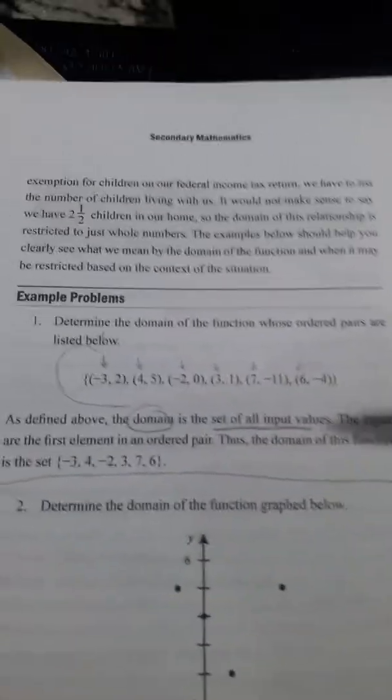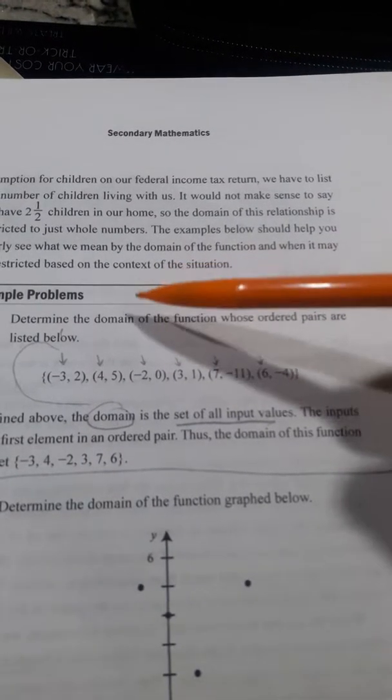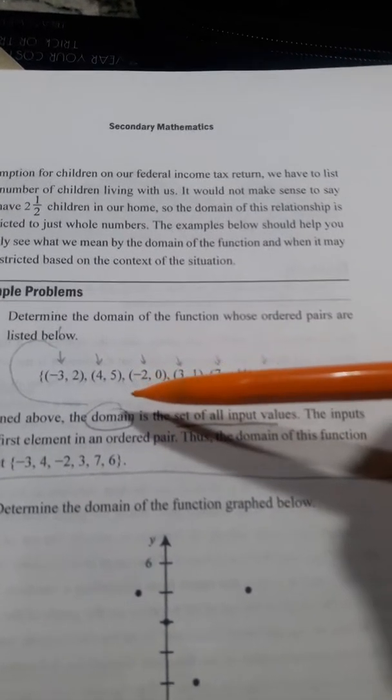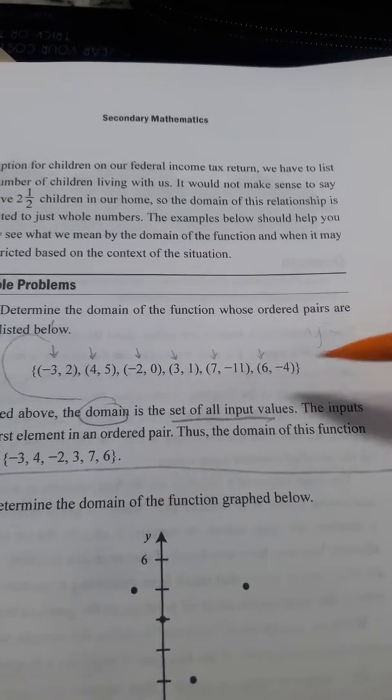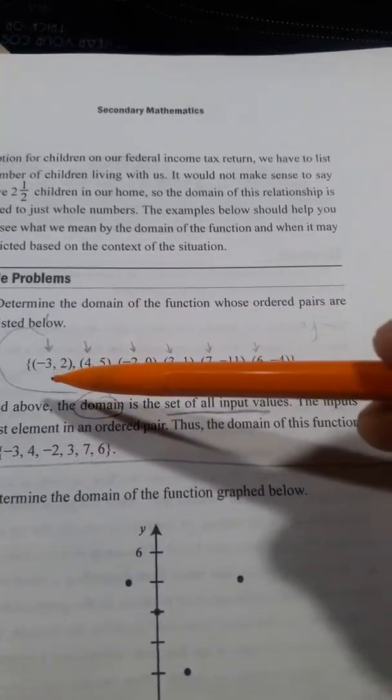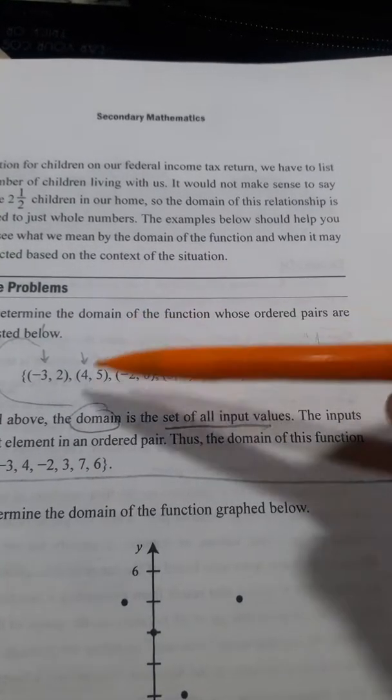So in our first example, they say, determine the domain of the function whose ordered pairs are listed below. It's going to say, like, there's some sort of function, like y equals whatever. And the values that are listed with that function are listed here.